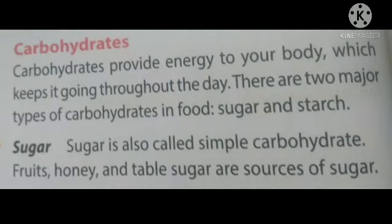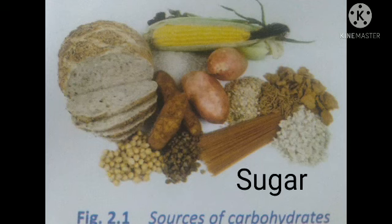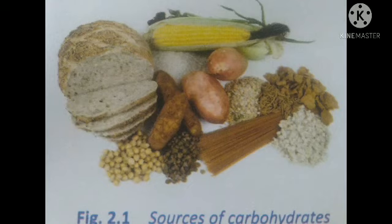Carbohydrates are those type of foods that provide energy to our body, which keeps us going throughout the day. There are two main types of carbohydrates: sugar and starch. Sugar is also called simple carbohydrates, consisting of fruits, honey and table sugar.